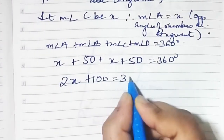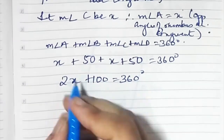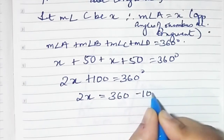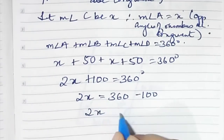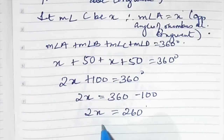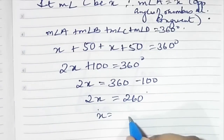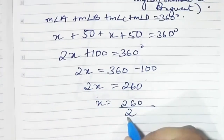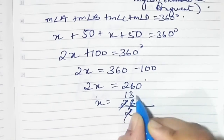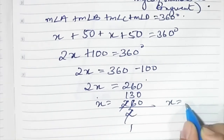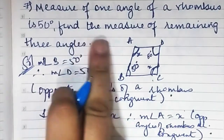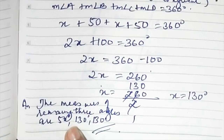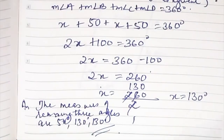2x + 100 = 360 degrees. Therefore 2x = 360 − 100 = 260. So x = 260 ÷ 2 = 130 degrees. The measures of the remaining three angles are 50 degrees, 130 degrees, and 130 degrees.